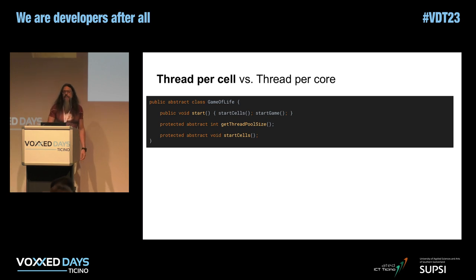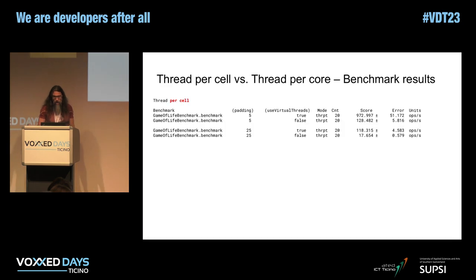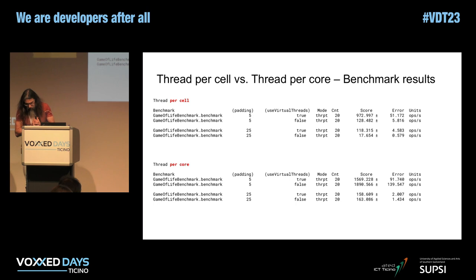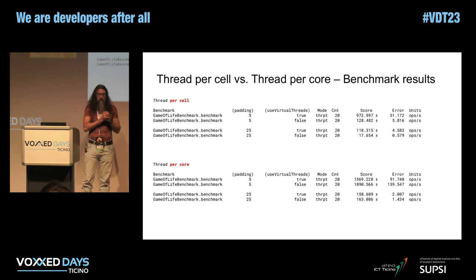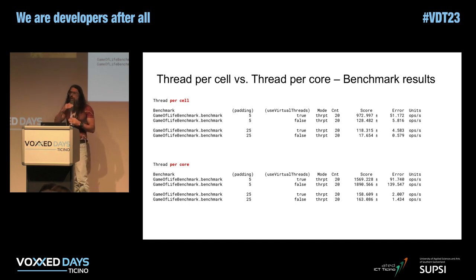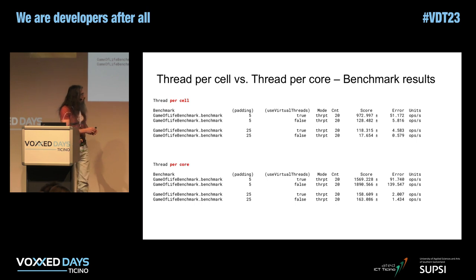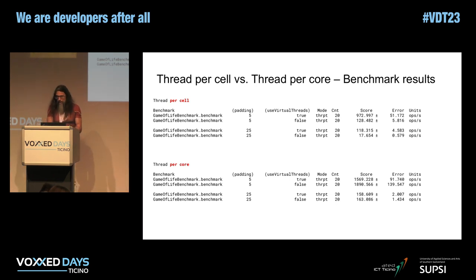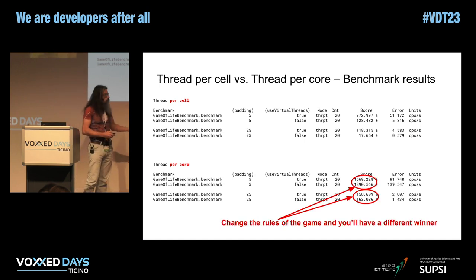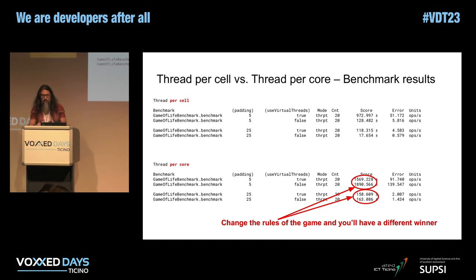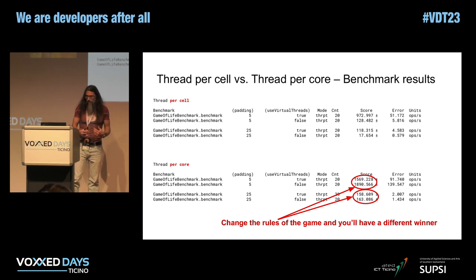I also did another experiment where instead of having one thread per cell, I made eight groups of cells — one per CPU core — so instead of 50,000 threads I have 8 threads with cells allocated across groups. In this setup the native implementation wins, because it is much better suited to having only 8 native threads. I just wanted to prove that by changing the rules, you also change the winner.